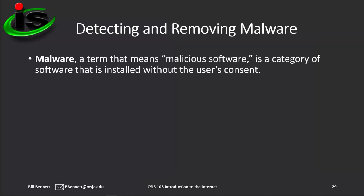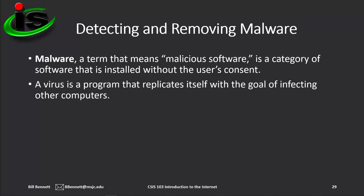Malware is a term that means malicious software. It's a category that refers to software that is installed without the user's consent, usually through a hidden program in an email attachment or from a file downloaded from a website. Perhaps the biggest threat of malware is that it is designed to be invisible to the user, who might have malicious code running on a device for a long time before suspecting a problem. Viruses, Trojan horses, and worms that attack computers are all examples of malware, and the programs they run are forms of integrity threats. A virus is a program that replicates itself with the goal of infecting other computers. For a virus to spread from one computer to another, it must be executed so it can infect other files and programs.